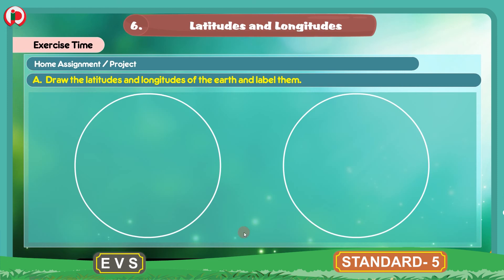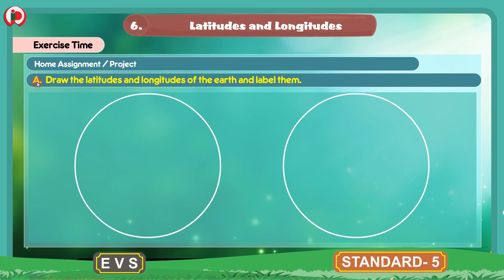The next section is home assignment/project. Part A: Draw the latitudes and longitudes of the earth and label them. Children, this activity you have to do in your workbook where two circles are given. In these circles you have to draw latitudes and longitudes and label them. For this diagram, you can take help from the course book and refer to the lesson.